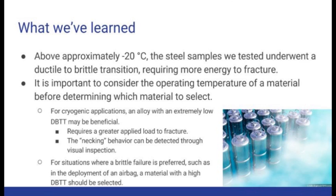The ductile to brittle transition temperature is an important property to include in material selection. For some applications, it can result in a preferred failure mechanism. For some components operating near their failure point, necking behavior can often be noticed through visual inspection, allowing for replacement of the part before it fails in service. Such inspection is a vital part of aircraft maintenance.